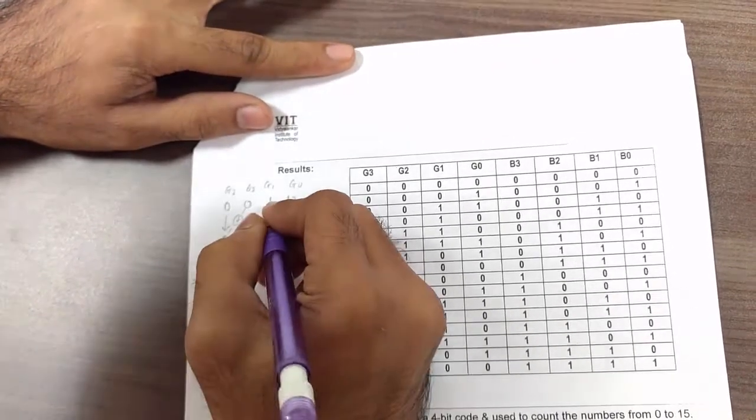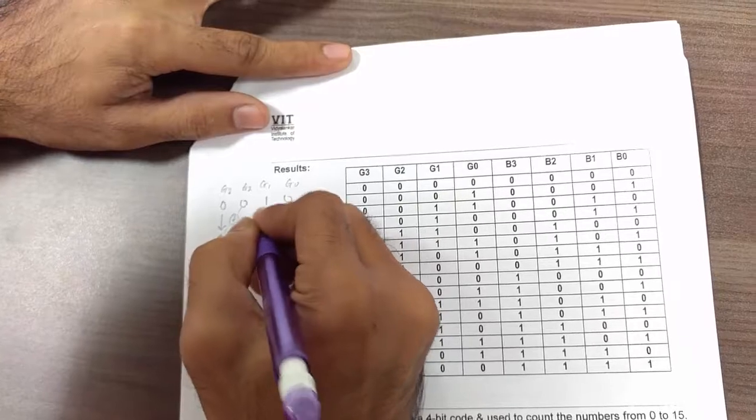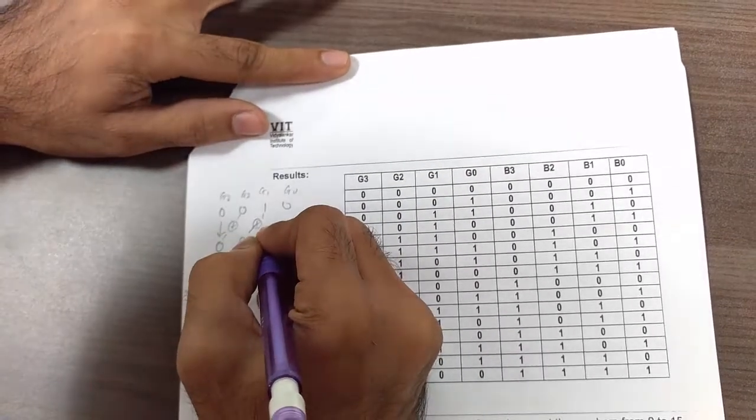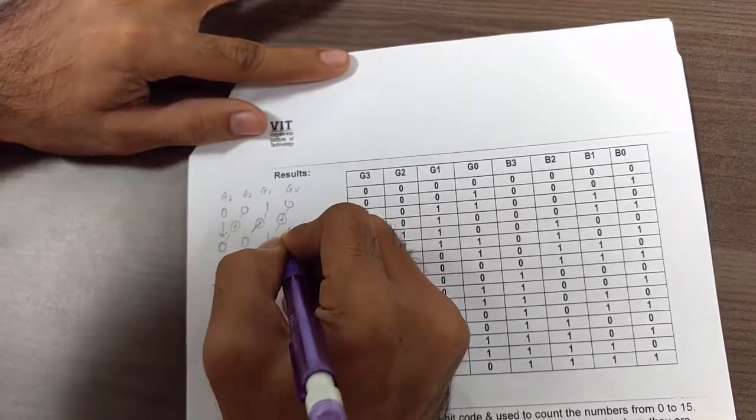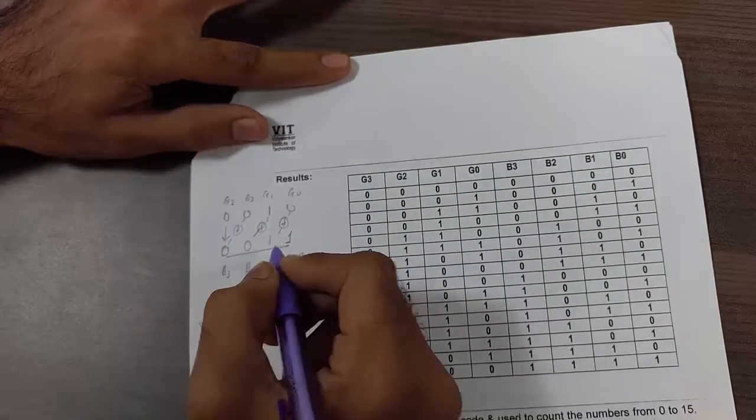Now this digit and this digit is XOR again. Now we get my B1, that is 1. Now this digit and this digit is XOR and we get 1. So this is my corresponding binary code.